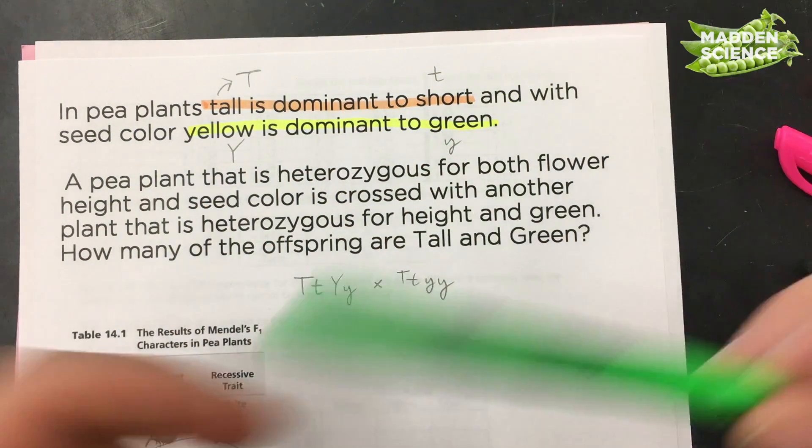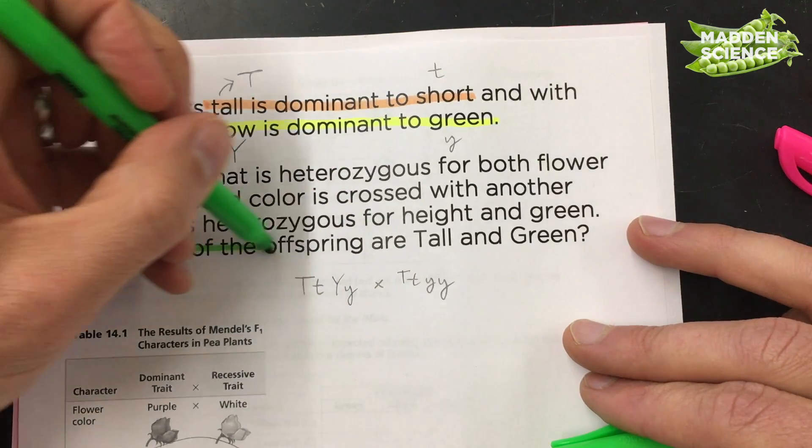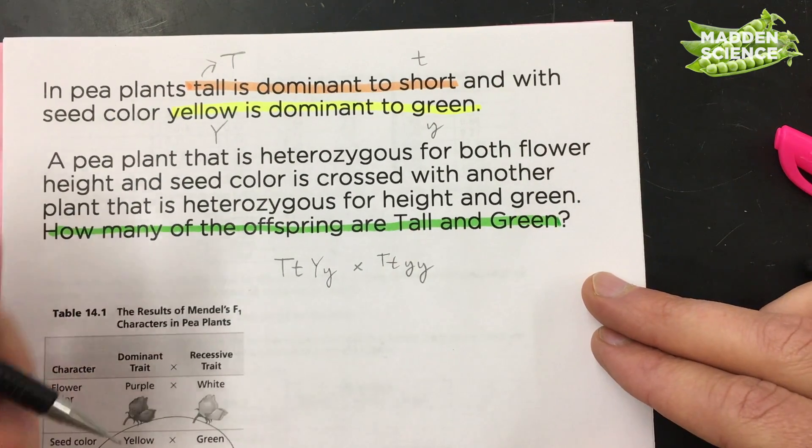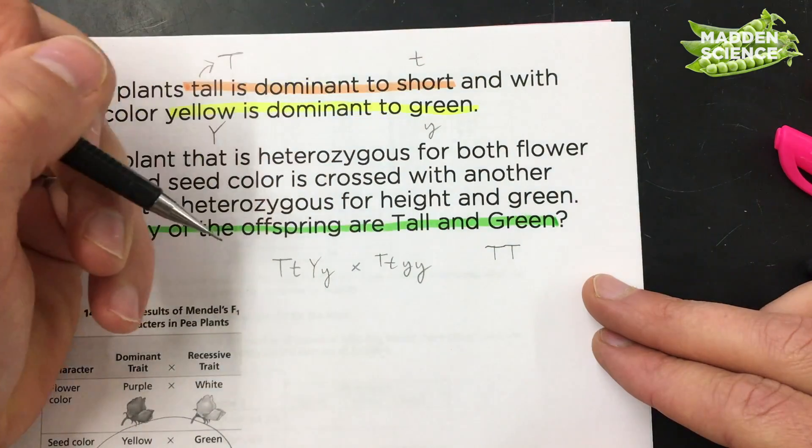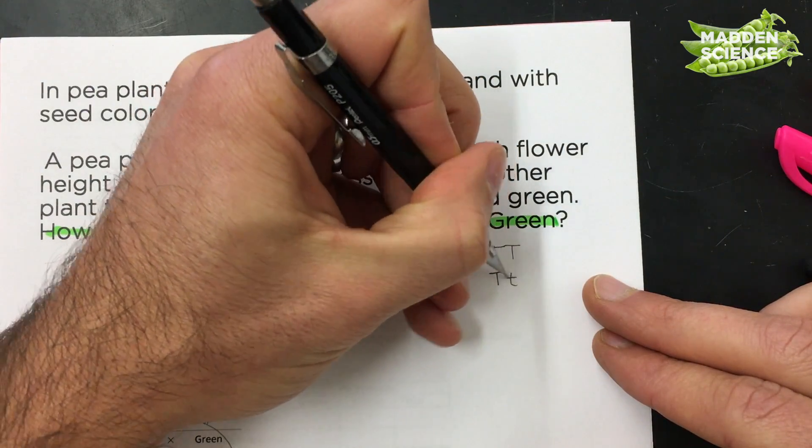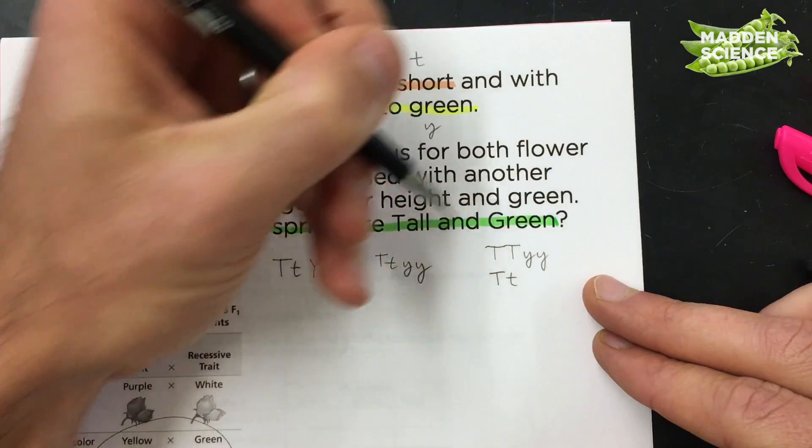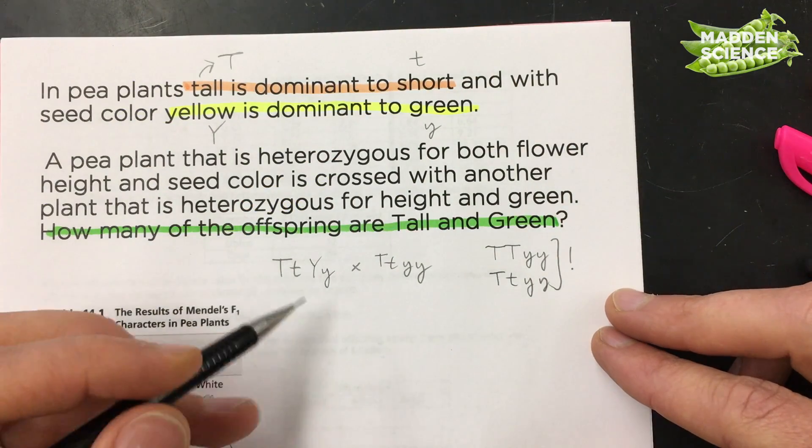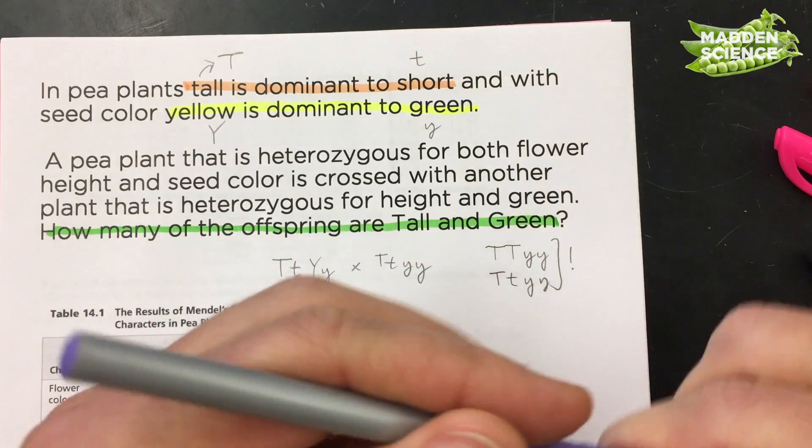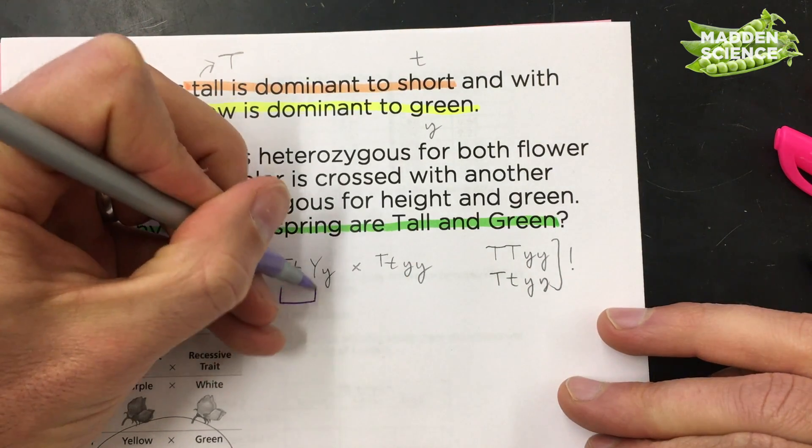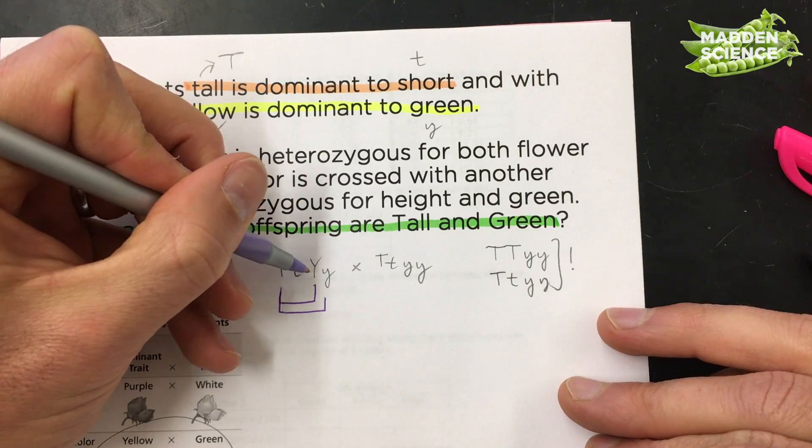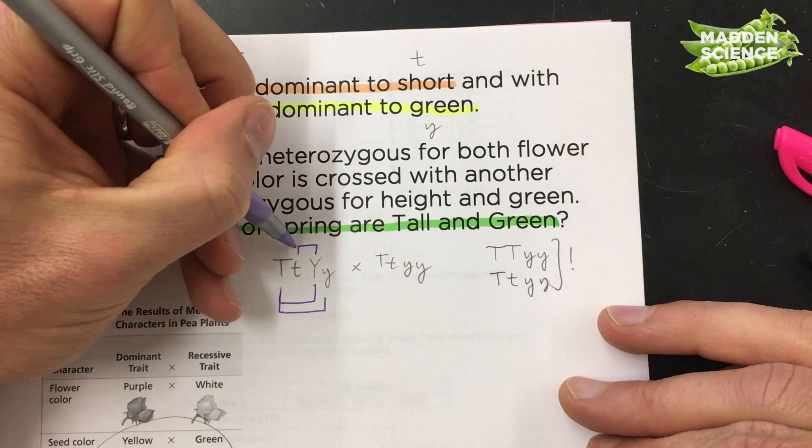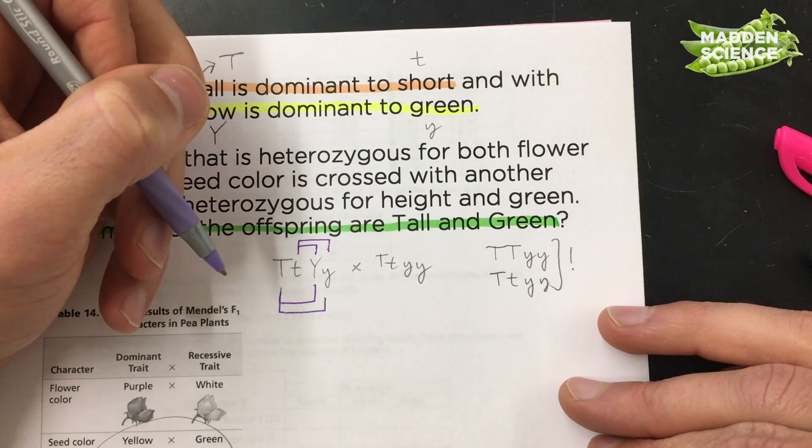Now the question that they're asking in the end is how many offspring are going to be tall and green? So we can give an eye out for that. Tall and green can come in one of two ways. You can be tall by being big T, big T, or tall by being big T, little t. And green, the only way to do it is with lowercase yy. So those would be things that we're keeping an eye out for. In terms of our Punnett square, we can do our gamete formation for the probabilities and divvy it off like this. Big T, big Y, big T, little y.